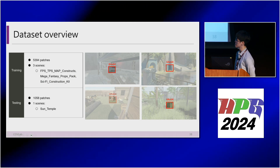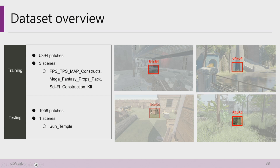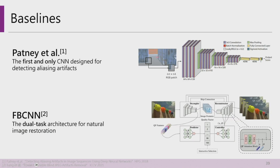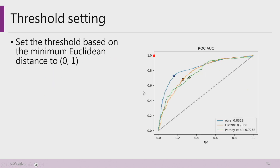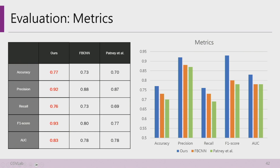Our dataset was generated from the Unity Asset Store, using four scenes — three for training and one for testing — ensuring no overlap. Our baselines include the first aliasing detection model by Pandian et al. and our backbone model FBCNN. The ROC curve shows our method has better classification results across thresholds. We further verified metrics like F1 score and accuracy by optimizing the threshold using the point on the ROC curve with minimum distance to the (0,1) point, and our results achieved higher scores across all metrics.